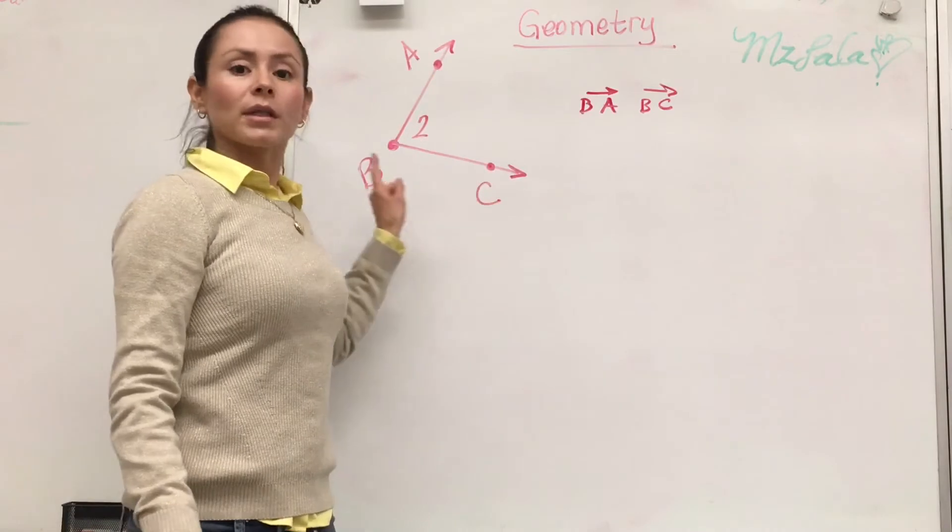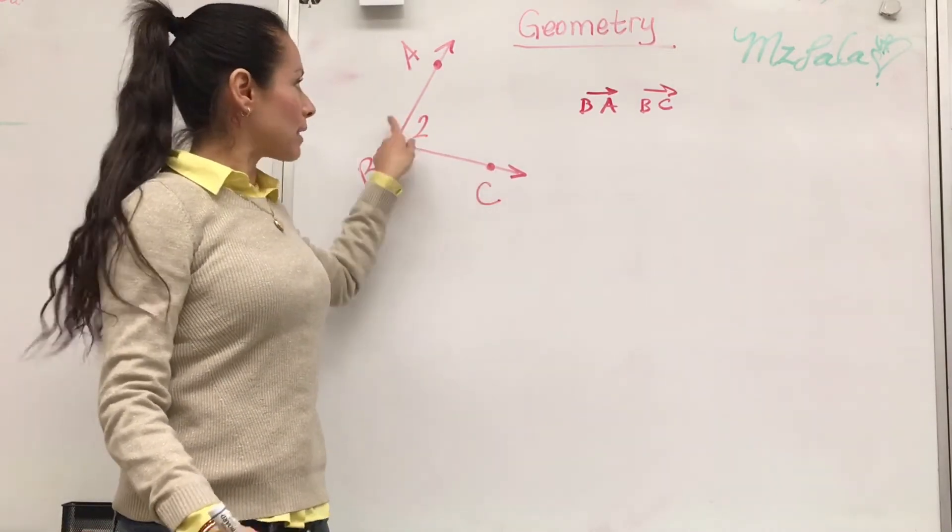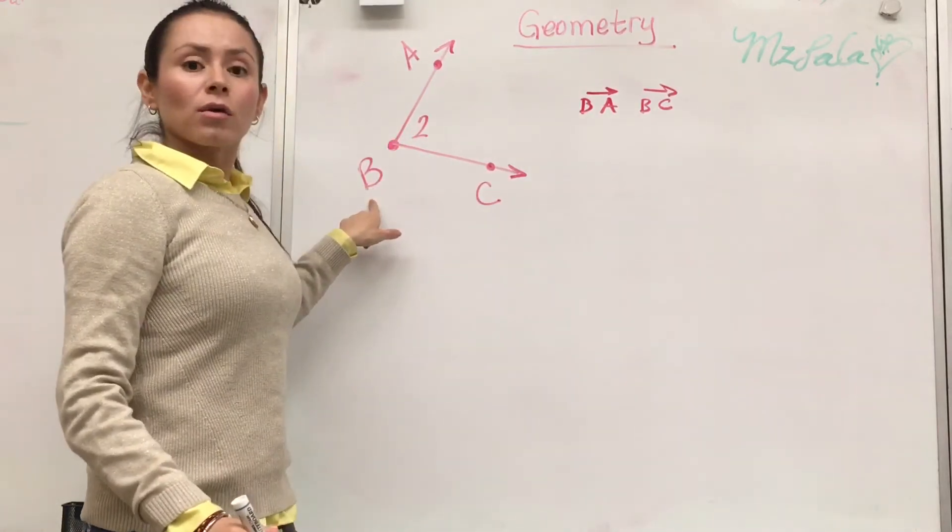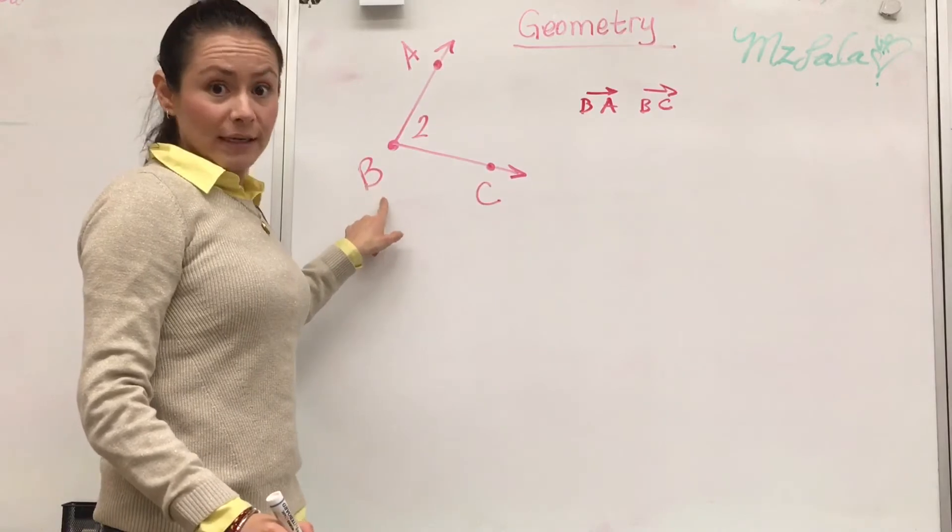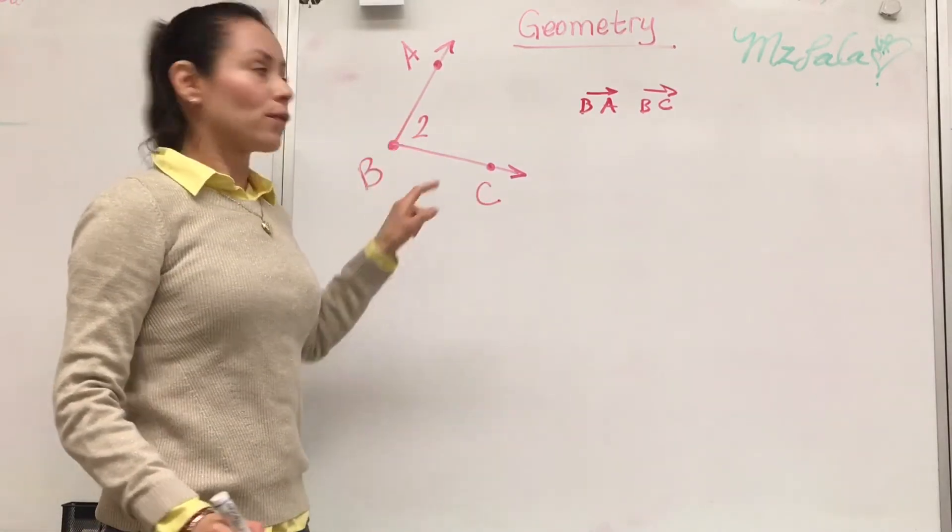So we have two rays with the common endpoint that are creating an angle. If you notice, we have an angle. We can also identify that B is its vertex, that's the common endpoint, and 2 is also a vertex.